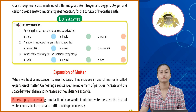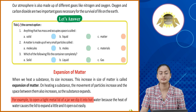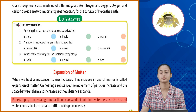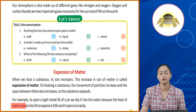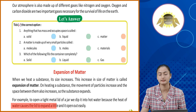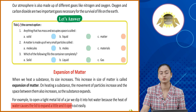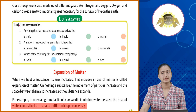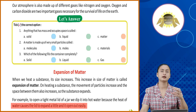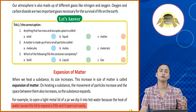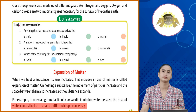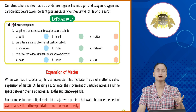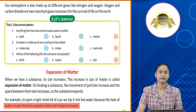For example, to open a tight metal lid of a jar, we dip it into hot water because the heat of water causes the lid to expand a little and it opens out easily. Isi tarike se agar hume kisi ka lid khollna hota hai, hume halka sa agar heat up kar denge toh molecules ka space bhar jata hai aur uski wajah se lid bohat asaani se khol jata hai.